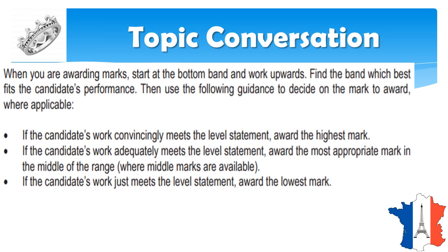When we are awarding marks as examiner, we always start from the bottom band and go upwards — find the band which fits the candidate's performance. If your work is convincingly meeting the level statement, I will award you the highest mark. If your work adequately meets the level statement, I will award the middle range of marks. If it is just not meeting it, then I will award the lowest marks. So there are only three marks here: lowest, middle range, and high.